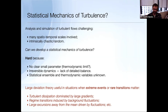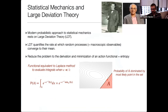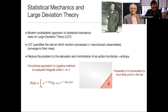This is relevant if you want to quantify turbulent dissipation dominated by large gradients, as in Navier-Stokes or Burgers; or if you have regime transitions induced by background fluctuations; or large excursions away from the mean driven by fluctuations. Let me begin by quickly introducing large deviation theory. It is one of the pillars of the modern approach to statistical mechanics. Large deviation theory quantifies the rate at which random processes—meaning microscopic observables—converge to their mean, and it reduces the problem to the derivation and minimization of an action functional, called the entropy in statistical mechanics. It is the functional equivalent of Laplace's method in function space.